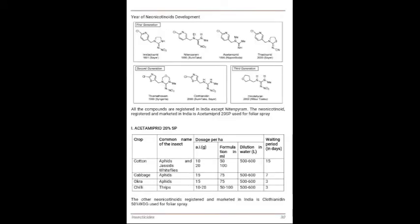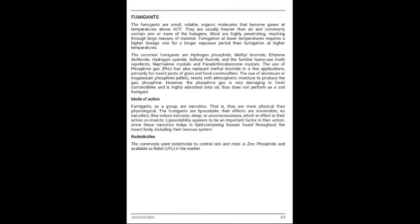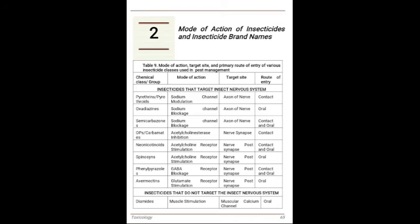The insecticide classification tables contain which insect attacks which crop, what is the recommended insecticide, what is the active ingredient in grams, formulation in mls or doses per hectare along with waiting period. Description is also given for unclassified compounds, new molecules, combination insecticides, insect growth regulators and fumigants. The second chapter covers mode of action of insecticides and insecticide brand names, including the target site and primary route of entry of various insecticide classes used in pest management.